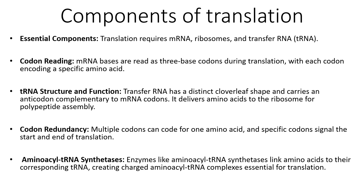Codon redundancy: multiple codons can code for one amino acid, as seen in the previous slide. Specific codons signal the start and end of translation — methionine (AUG) usually starts it, and the end of translation is signaled by UAA, UAG, and UGA. Enzymes called aminoacyl-tRNA synthetases link amino acids to their corresponding transfer RNA, producing charged aminoacyl-tRNA complexes, which are essential for translation.